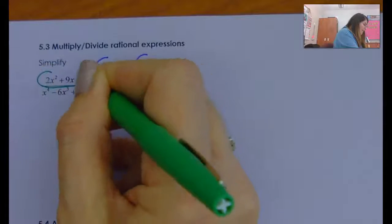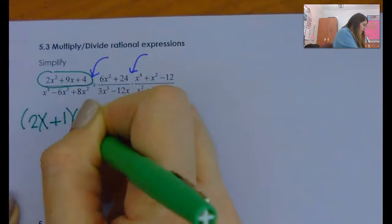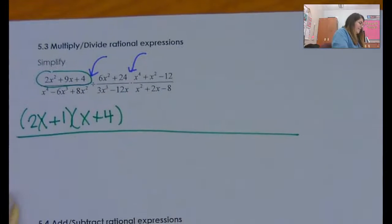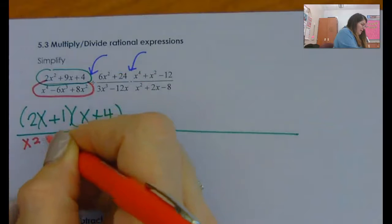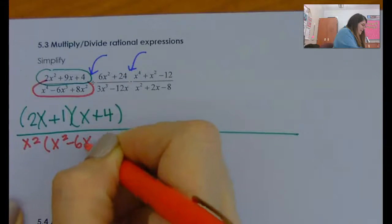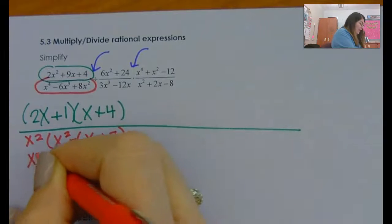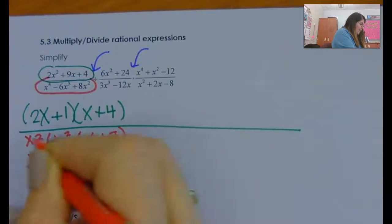So my job is to factor each. This becomes 2x plus 1, x plus 4. In the denominator, this has an x squared I will factor out, and then it's x squared minus 6x plus 8. That keeps going, so that is x squared, x minus 4, x minus 2.